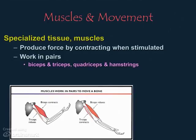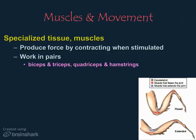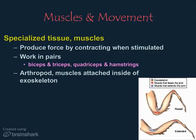These muscles are each attached to two different bones, and when contracting, one of those muscles pulls those two bones together while the other relaxes. Arthropod muscles work in much the same way, except they're attached to the inside of the exoskeleton. As you can see in this picture, while one muscle contracts the other relaxes, pulling the two appendage sections one way or the other.